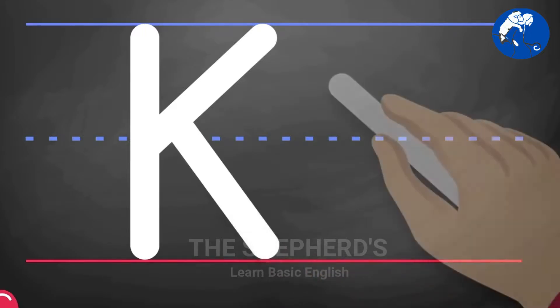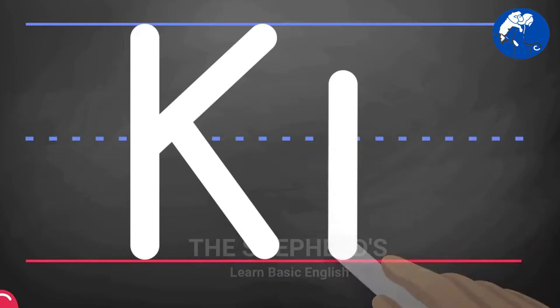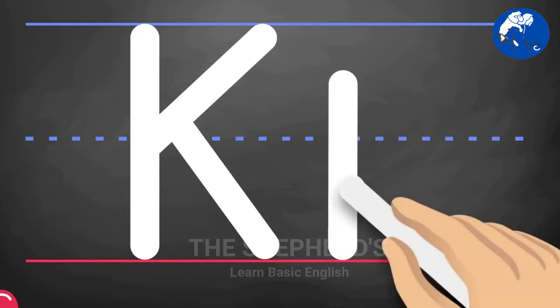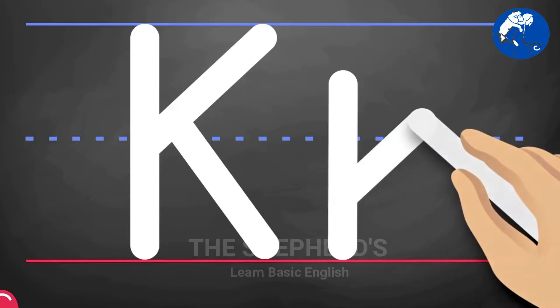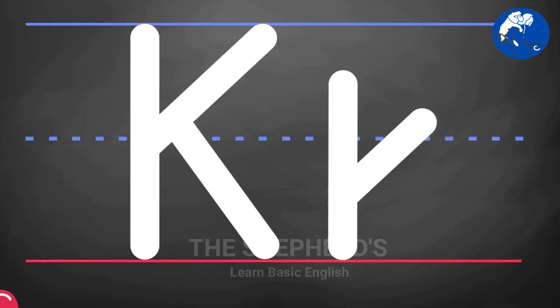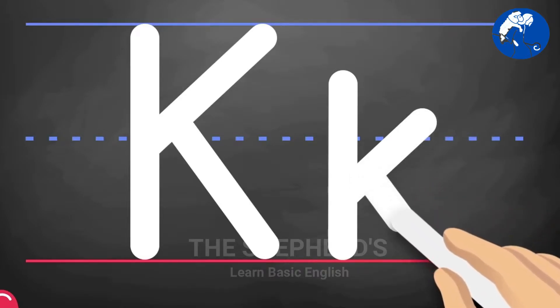Lowercase K: Pull down. Slant up and draw another diagonal line out.